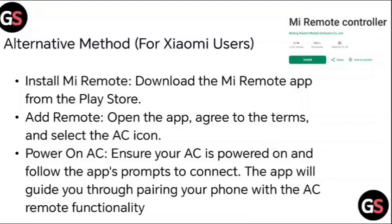Ensure your AC is powered on and follow the app prompts to connect. The app will guide you through pairing your phone with the AC remote functionality.